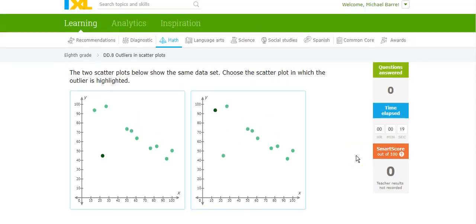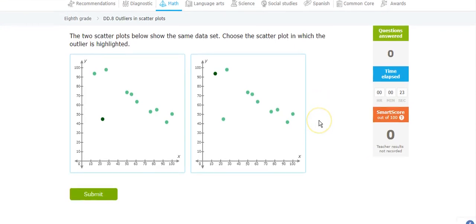Hi, this is Mr. Barr, and this IXL deals with outliers in scatter plots. So here are two different scatter plots, and the question is, choose the scatter plot in which the outlier is highlighted.